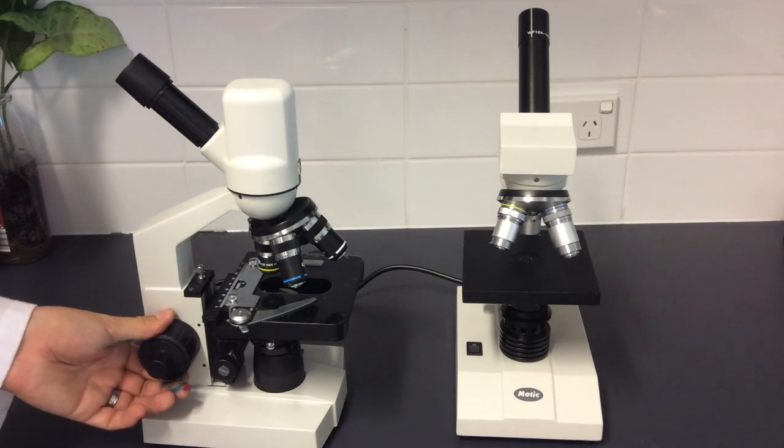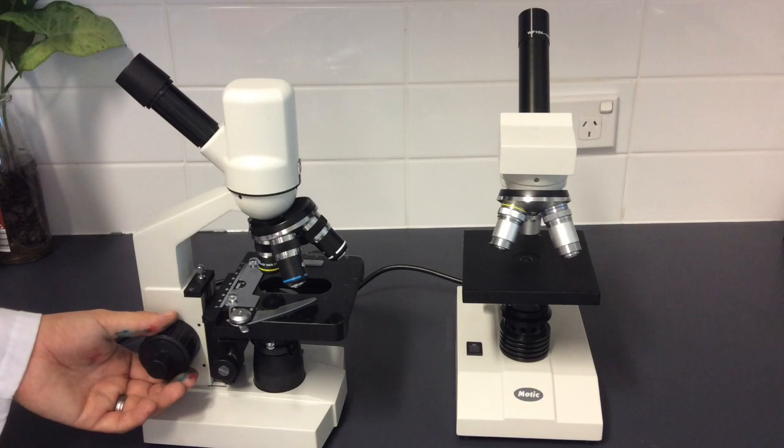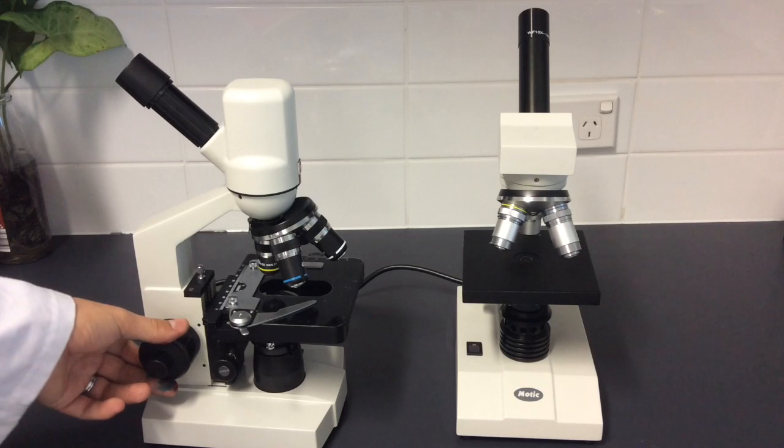This larger one here, often there's two of them separate but in this case they're both joined together. The larger one is called the coarse knob which moves the stage up and down. That brings the image into view.